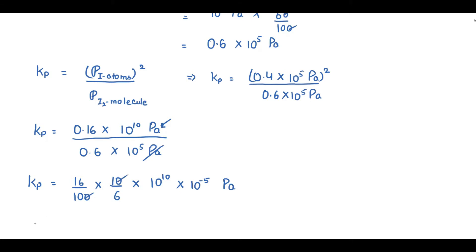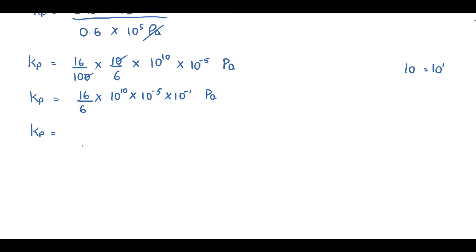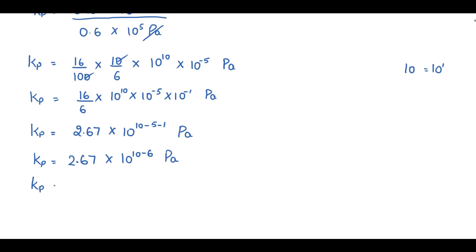Removing decimals: 0.16 becomes 16/100 and 0.6 becomes 6/10. Cancelling gives 16/6 × 10¹⁰ × 10⁻⁵ × 10⁻¹. Adding the powers: 10 − 5 − 1 = 4. So Kp equals 16/6 = 2.67, multiplied by 10⁴ Pascal. Therefore, the equilibrium constant Kp equals 2.67 × 10⁴ Pascal. This is your final answer.